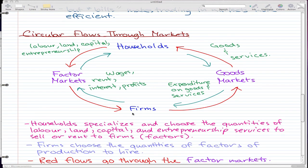And we're going to start off with the households. And the households are people like you and me who specialize and choose the quantities of labor, land, capital, and entrepreneurship services to sell or rent to the firms, which are the factors or the big companies.